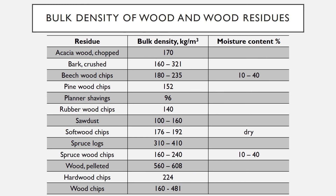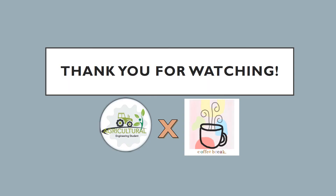Wood pelleted: 560 to 608 kilograms per cubic meter. Hardwood chips: 224 kilograms per cubic meter. Wood chips: 160 to 481 kilograms per cubic meter. Thank you so much for watching.